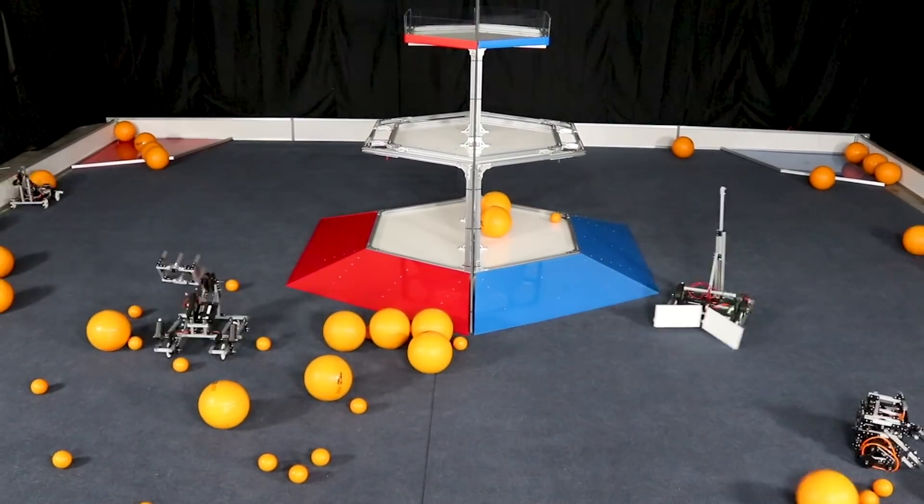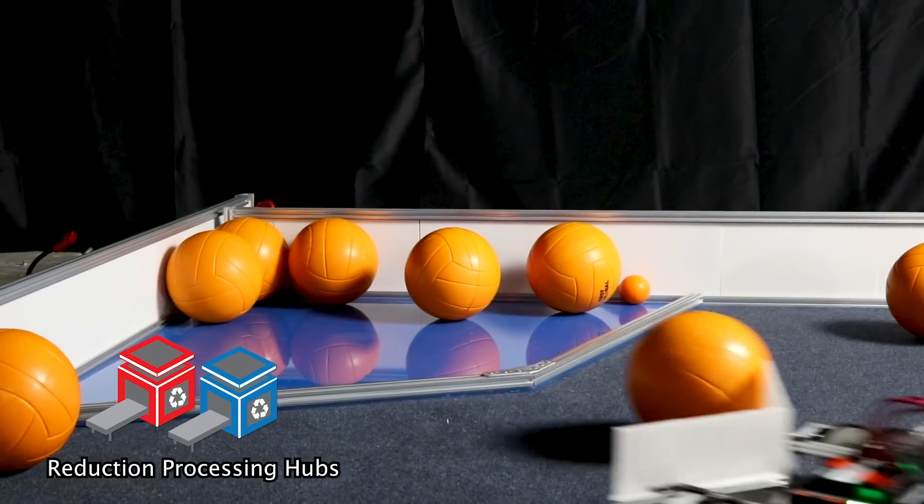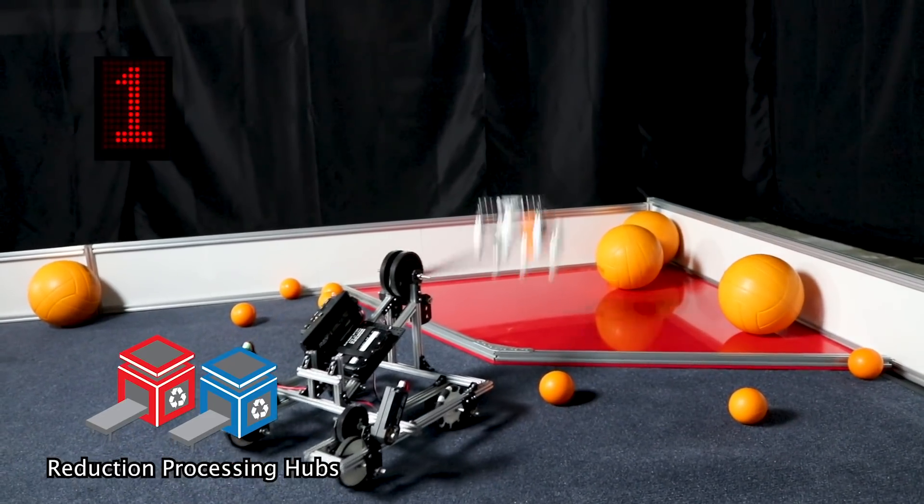For the remainder of the match, collectors are free to move around the ocean however teams choose. Collectors can deposit pollutants in their reduction processing hub for one point per pollutant.